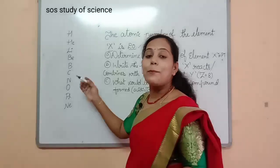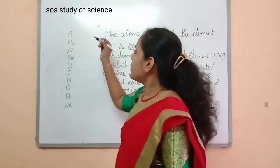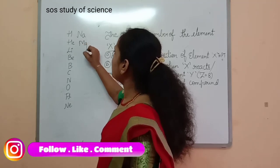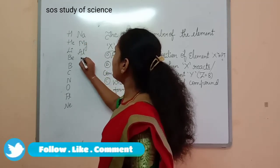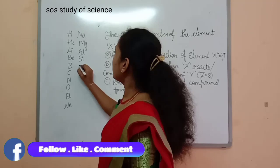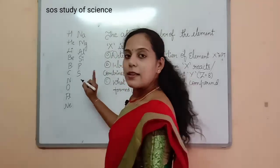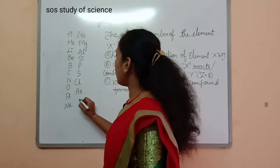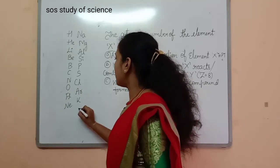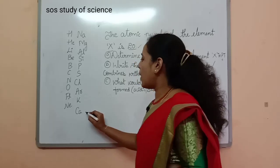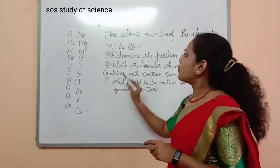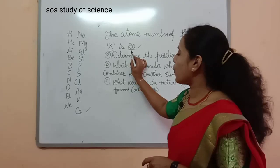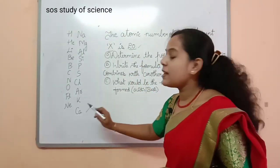The atomic number is the position of that element. The 11th element is sodium, then magnesium, aluminum, silicon, phosphorus, sulfur, chlorine, argon, potassium, and calcium. The 20th element is calcium. The atomic number of element X is 20, so the element is calcium.